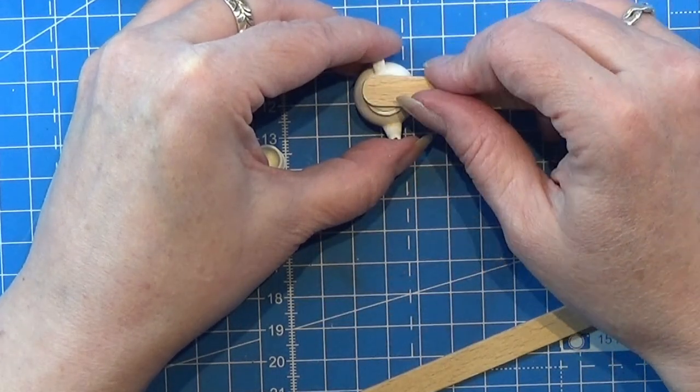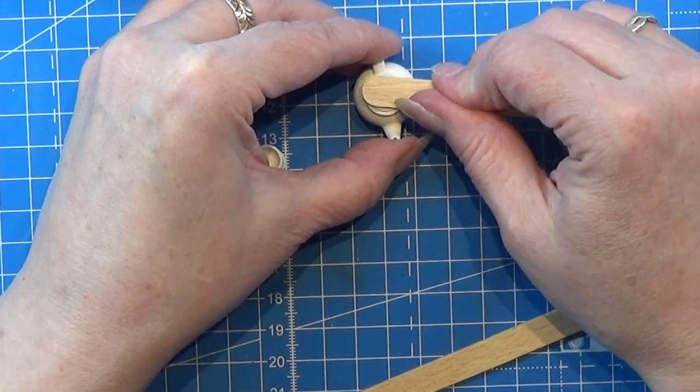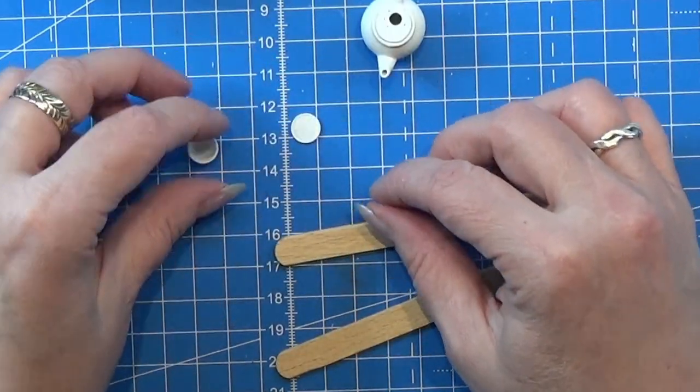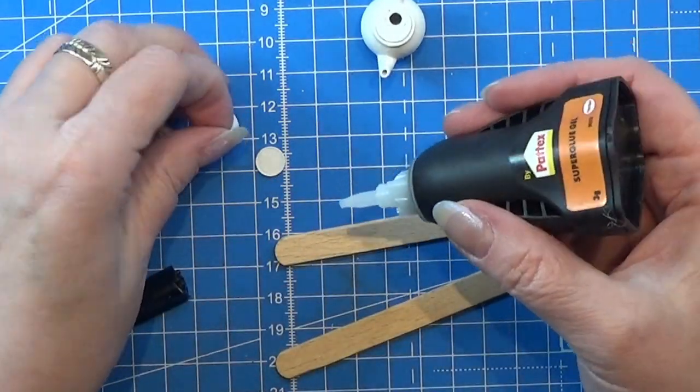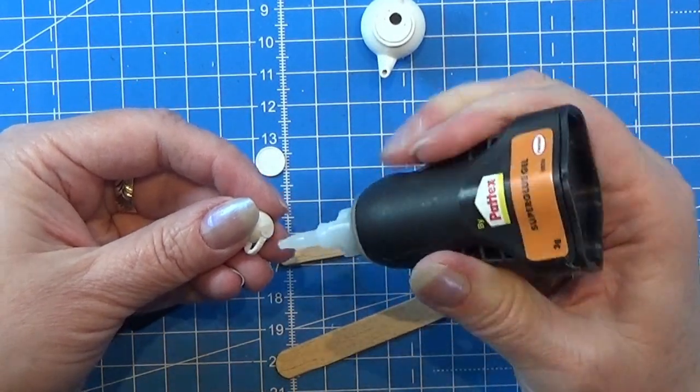Here I am gluing on this little lid for the teapot with my super glue gel, and I'm also going to glue the teapot onto the plate.